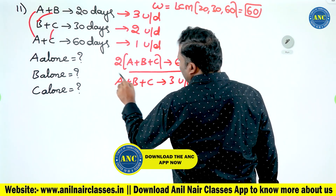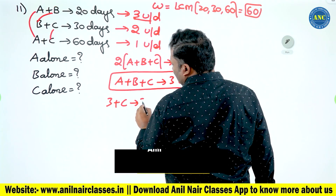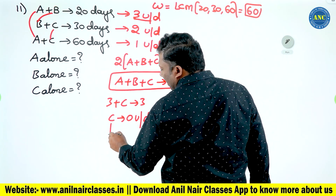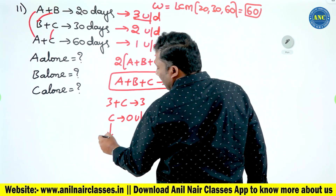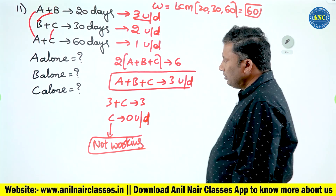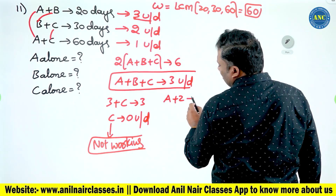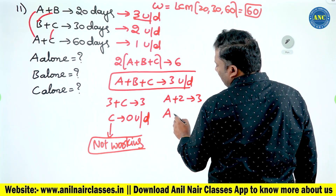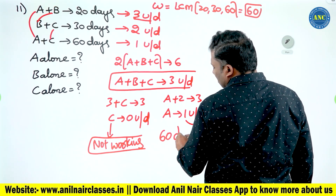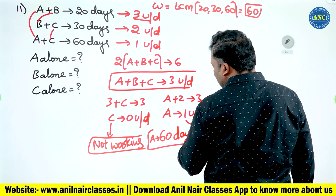From A plus B plus C = three units per day, and A plus B = three units per day, C equals zero units per day — C is not actually working. Then B plus C = two units per day means A plus two equals three, so A = one unit per day. Sixty units divided by one = A takes 60 days.